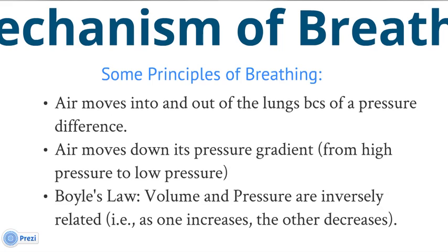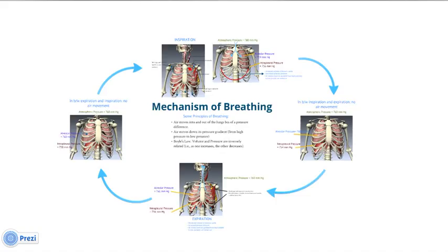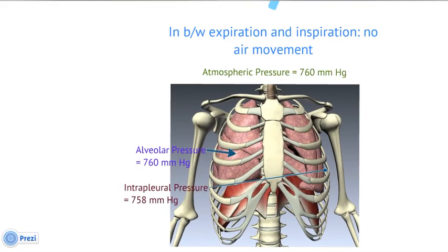The third principle is Boyle's law, which states that volume and pressure are inversely related. As the volume of a container increases, the pressure inside decreases, and conversely, as the volume decreases, the pressure increases — they're inversely proportional. In the case of breathing, that container is the thoracic cavity. What we see in this image are the lungs encased in the thoracic cavity — the rib cage around the lungs and the diaphragm below.